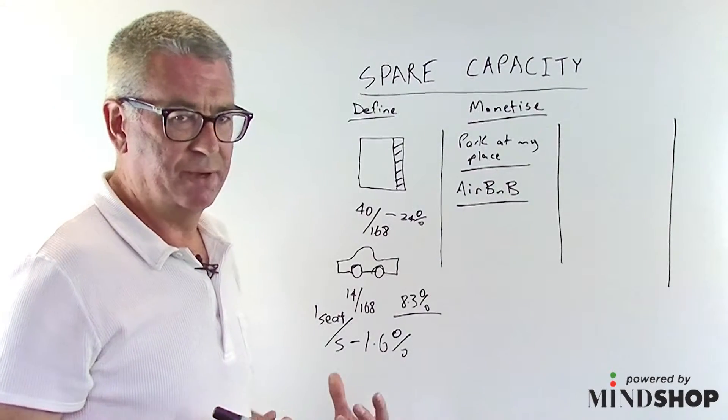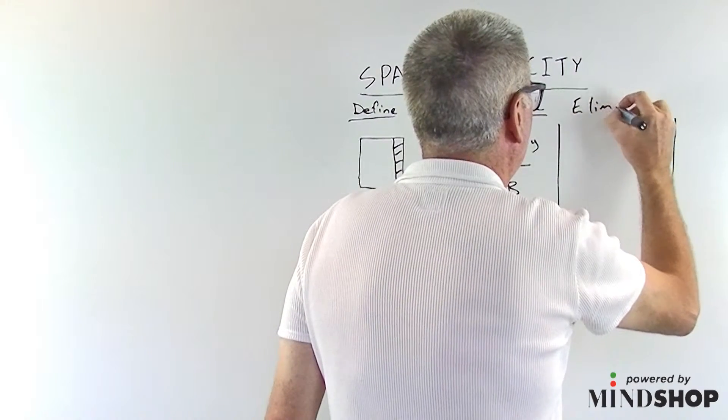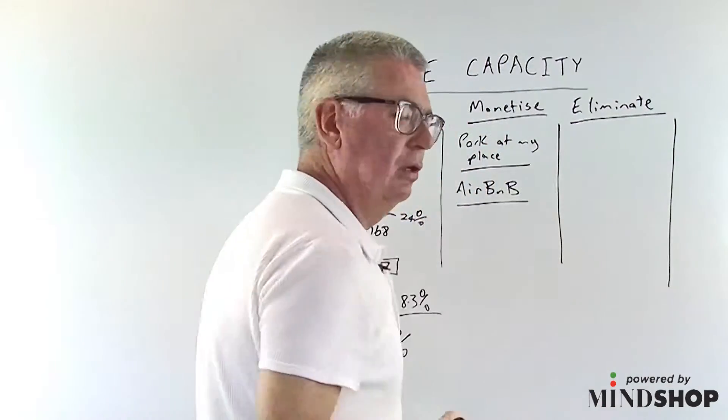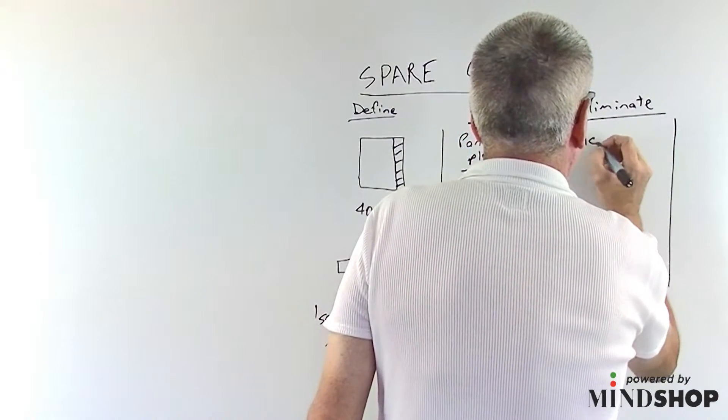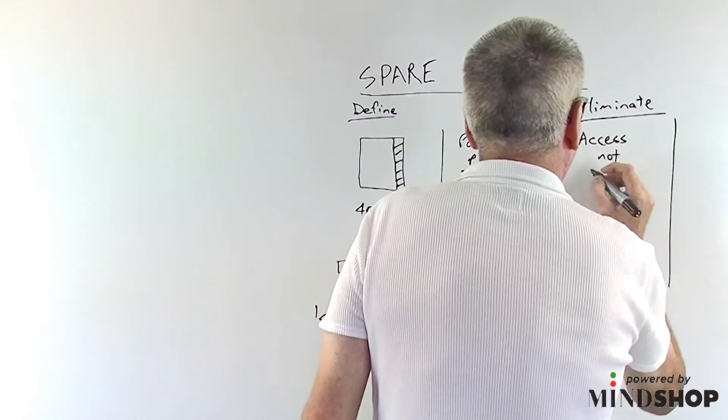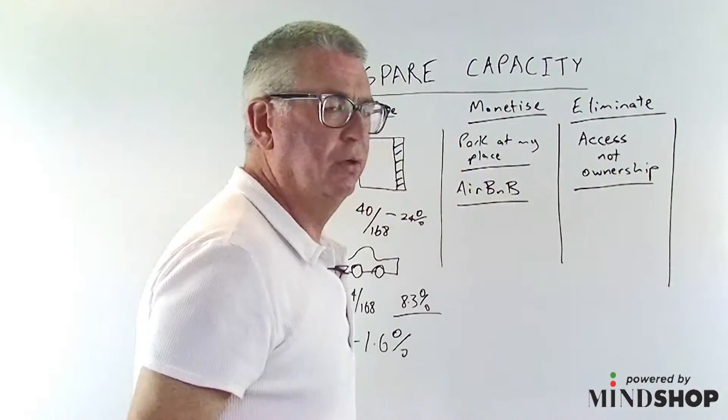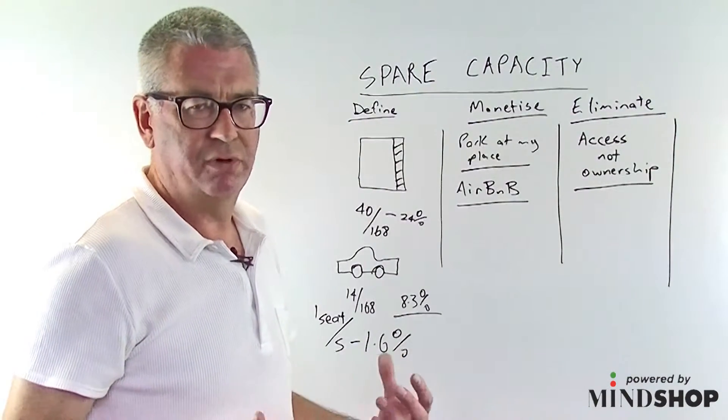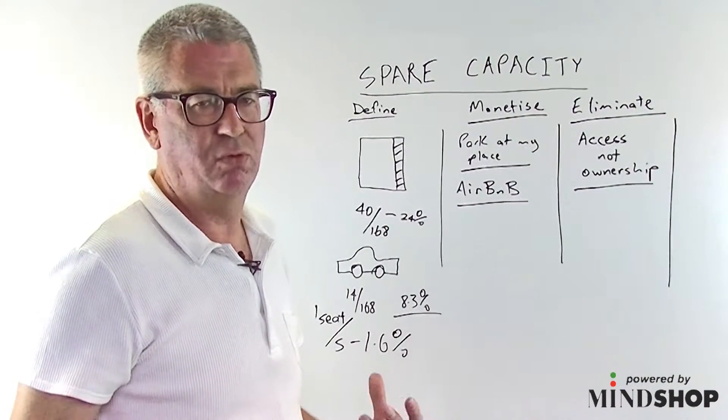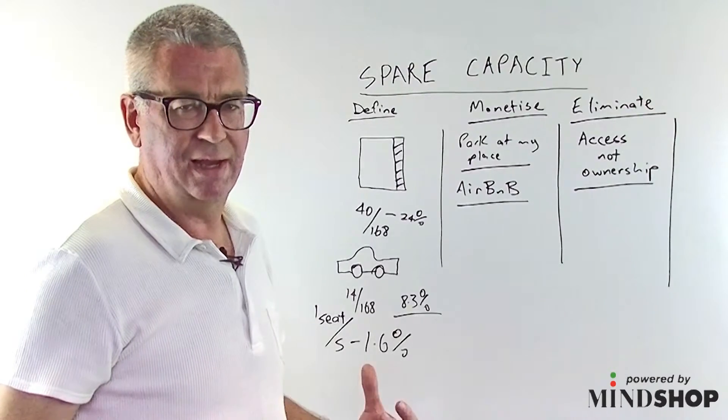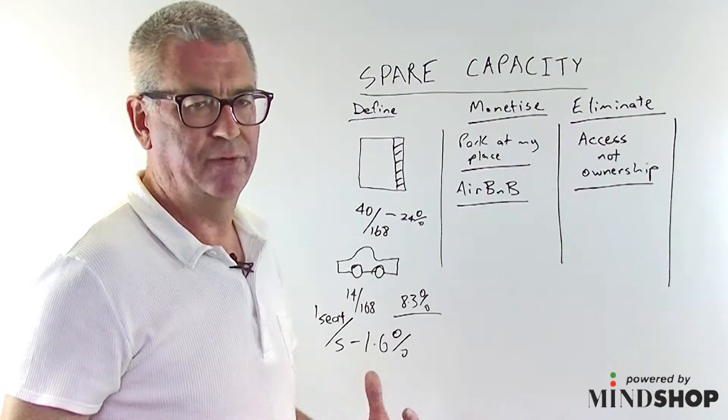But really, the ultimate thing about spare capacity is to not have it, to eliminate it. So what that means is we access it, we don't own it. An easy example of that is a beach house. I don't need to own a beach house if using Airbnb I can access a beach house when I want it. I don't necessarily need to own a car if I can access Uber and have my own private driver whenever I need transport.